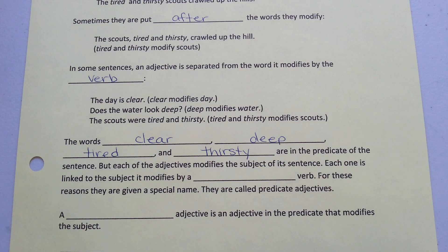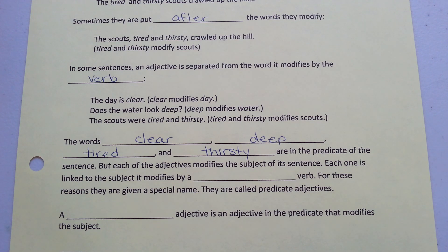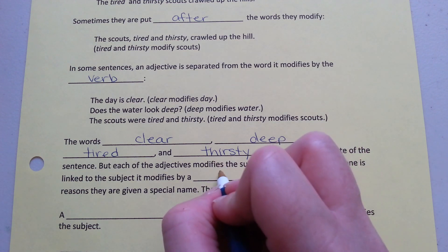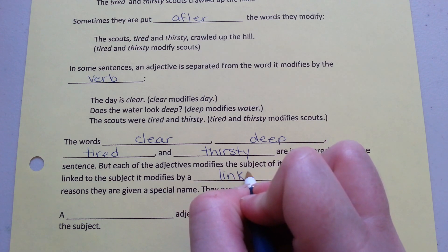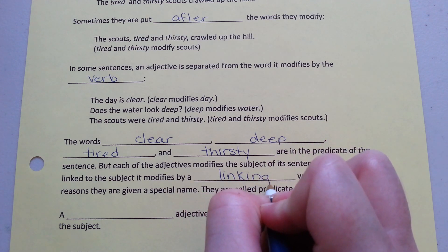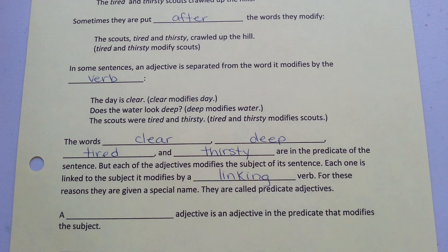But the adjective modifies the subject of the sentence. Each one is linked to the subject it modifies by a linking verb. For these reasons, they are given a special name: they are called predicate adjectives.